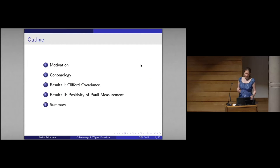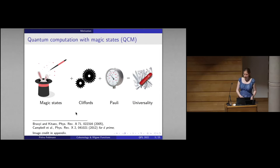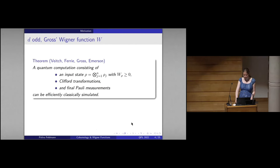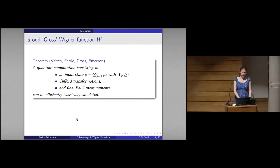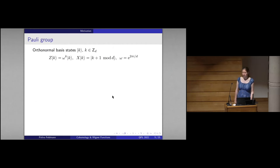The reason we are interested in Wigner functions is quantum computation with magic states. If we start from magic states, it is sufficient to use only Clifford unitaries and Pauli measurements to perform universal quantum computation, at least for prime D. In odd dimensions, using the Gross Wigner function, a quantum computation consisting of a product input state with non-negative Wigner function, Clifford transformations, and final Pauli measurements can always be efficiently classically simulated. This means magic requires Wigner negativity.